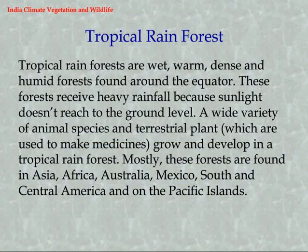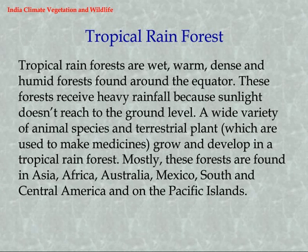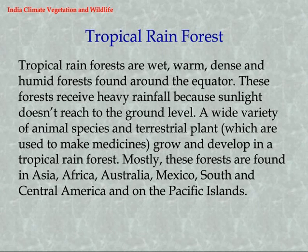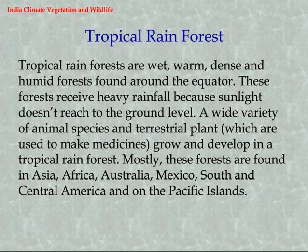Tropical Rain Forest. Tropical rain forests are wet, warm, dense and humid forests found around the equator. These forests receive heavy rainfall and sunlight doesn't reach the ground level. A wide variety of animal species and terrestrial plants, which are used to make medicines, grow here. Mostly these forests are found in Asia, Africa, Australia, Mexico, South and Central America, and on the Pacific Islands.